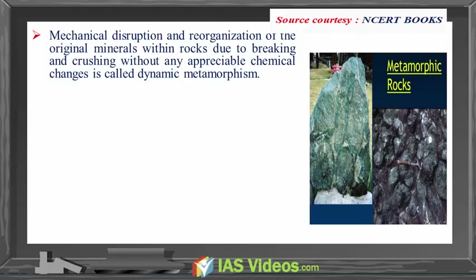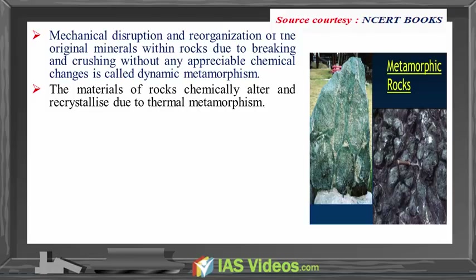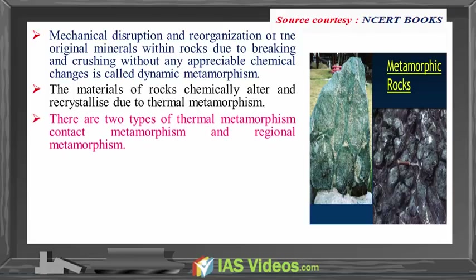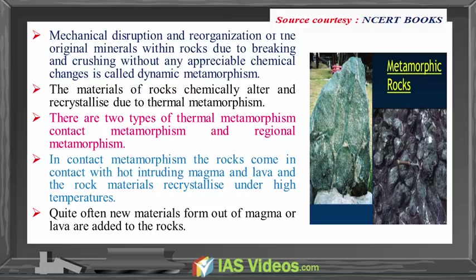Mechanical disruption and reorganization of the original minerals within rocks due to breaking and crushing without any appreciable chemical changes is called dynamic metamorphism. The materials of rocks chemically alter and recrystallize due to thermal metamorphism. There are two types of thermal metamorphism: contact metamorphism and regional metamorphism. In contact metamorphism, the rocks come in contact with hot intruding magma and lava and the rock materials recrystallize under high temperature. Quite often, new materials from magma and lava are added to the rocks.